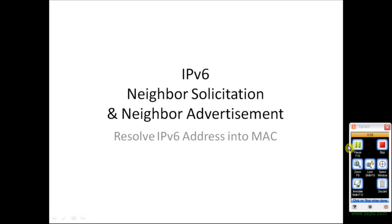In IPv4, this process is based on ARP — Address Resolution Protocol. A computer broadcasts an ARP request which is received by all computers on the network. The computer that finds its IPv4 address in the ARP request replies with an ARP reply containing its MAC address. The requesting computer then stores that MAC address in its ARP cache and sends frames with the complete destination information.